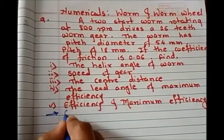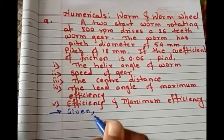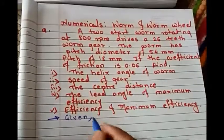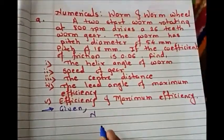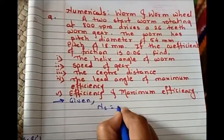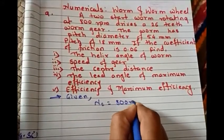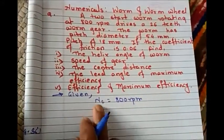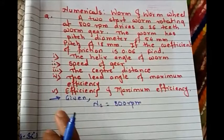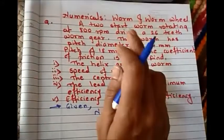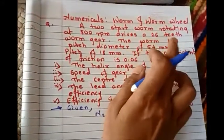What is given is the rpm for the worm, so n2 equals 800. Here we are going to use the symbol 2 for worm and 1 for worm gear. It drives a 26 teeth worm gear, so number of teeth of worm gear t1 is 26.